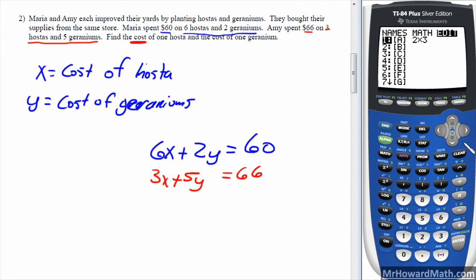We'll go a little faster this time. So 6, 2, and 60 are the first row. The second row is 3, 5, and 66. Check it. 6, 2, 60. First row is good. 3, 5, 66 for the second row. That looks good, too. So second quit.